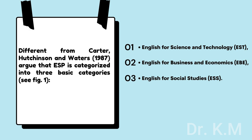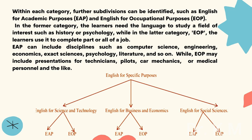Different from Carter, Hutchinson and Waters (1987) argue that ESP is categorized into three basic categories — see figure 1: English for Science and Technology (EST), English for Business and Economics (EBE), and English for Social Studies (ESS). Within each category, further subdivisions can be identified, such as English for Academic Purposes (EAP) and English for Occupational Purposes (EOP). In the former category, learners need the language to study a field of interest such as history or psychology, while in the latter category (EOP), learners use it to complete part or all of a job.